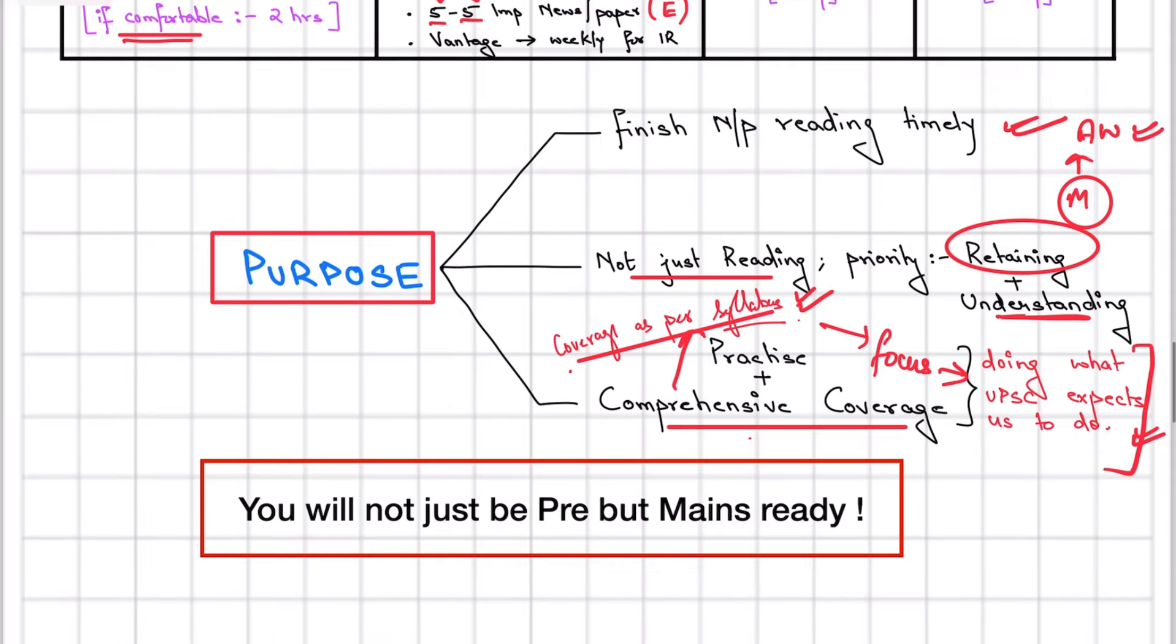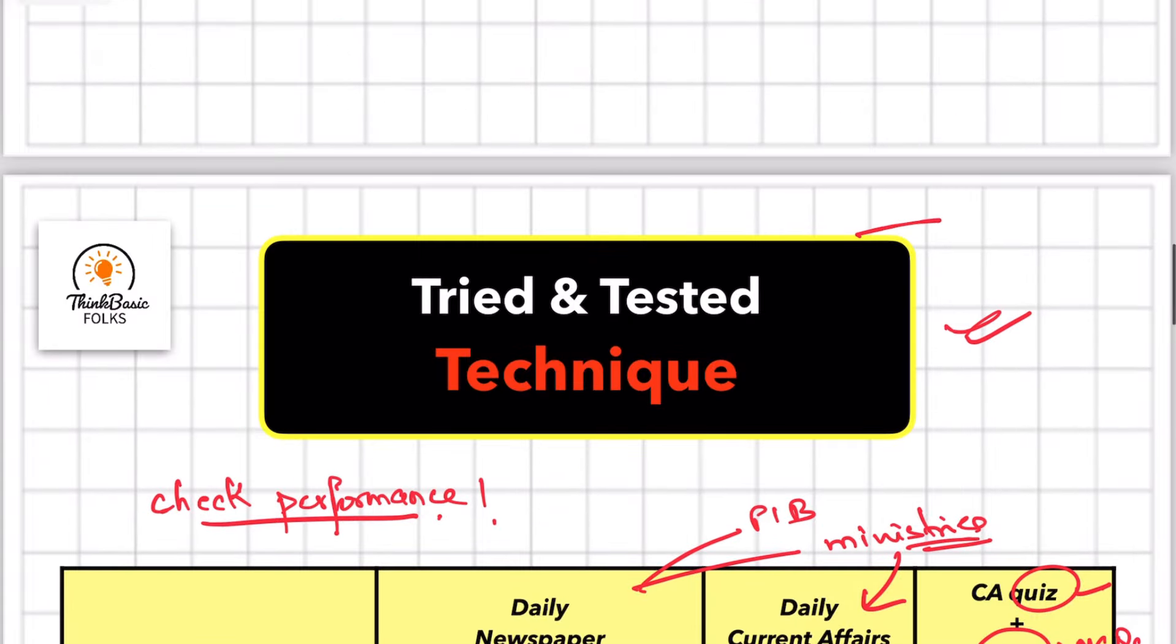If you follow this, you will not just be prelims ready but also mains ready. So definitely I'm telling you this is going to benefit you a lot. If you're having a lot of problems with newspapers, just follow this technique and you'll see yourself how much more confident you become. Not just reading current affairs magazines - you won't need to read them repeatedly, it will be easier for you.